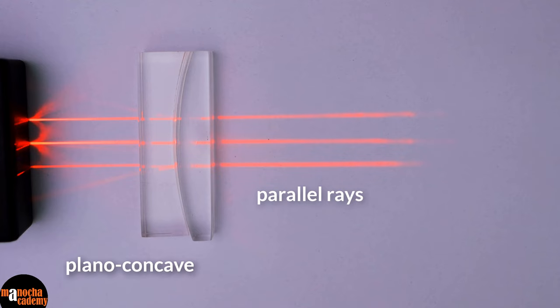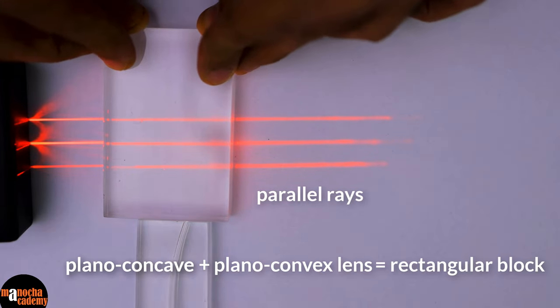Now if I add a Plano-Convex lens to this Plano-Concave lens, what will happen? Again we are seeing the light rays emerge parallel as the Plano-Convex and Plano-Concave lens are cancelling the effect of each other. And the combination is behaving like a rectangular glass block.